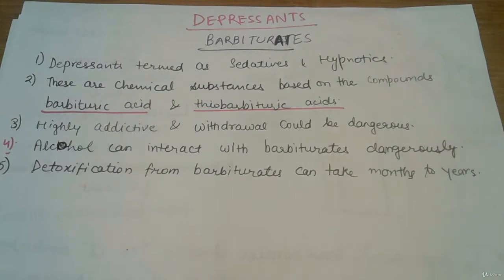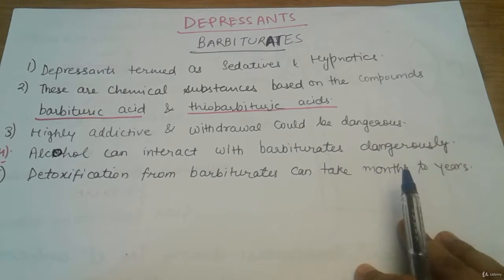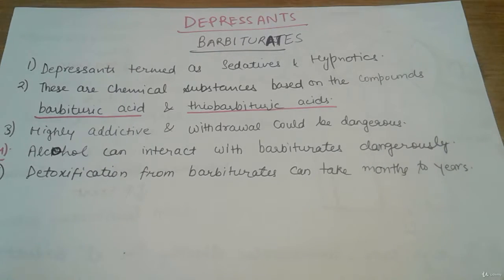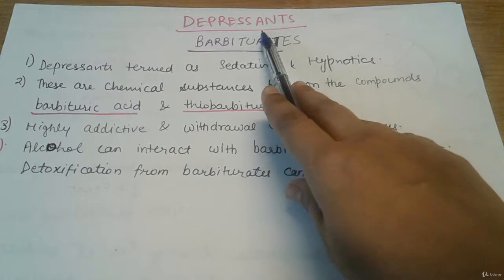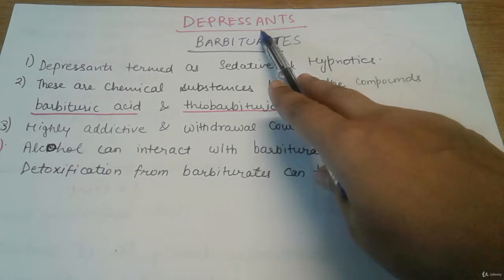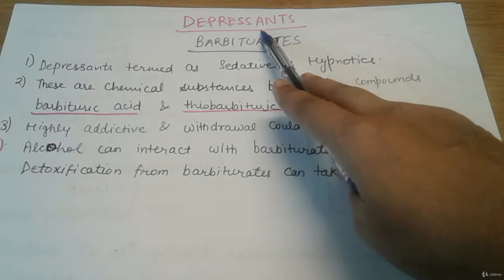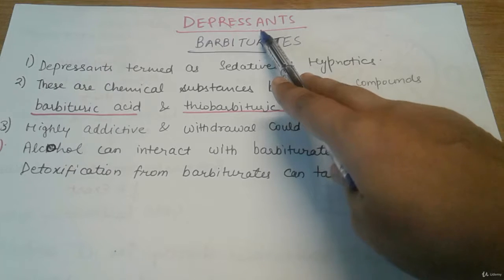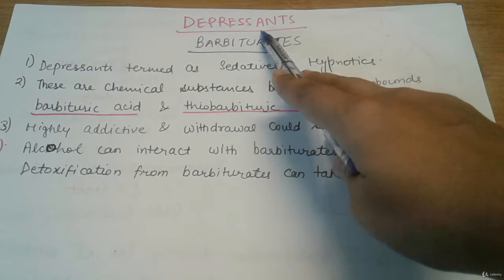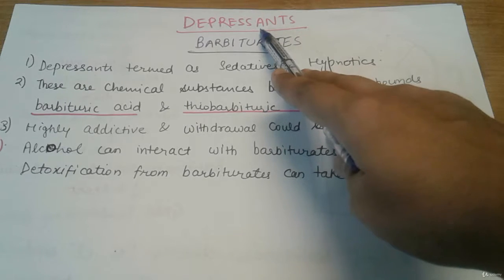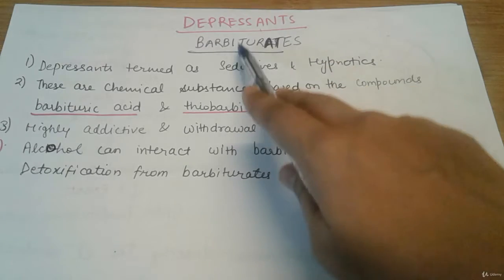Hello students. Previously we discussed CNS stimulants, so now we will discuss depressants — another category of illicit drugs. Whenever depressants come to mind, we think about alcohol, the ethyl alcohol which is the main ingredient of beer and alcoholic substances. These are usually known as depressants. Many prescription drugs are also given to depress the central nervous system, and many patients abuse them as depressants. Today in the depressant category we will discuss barbiturates.